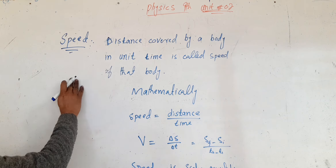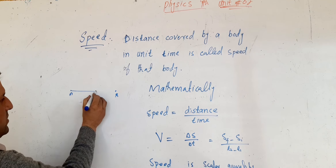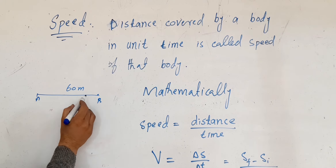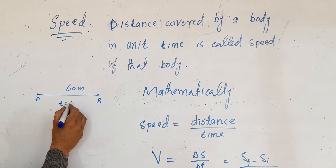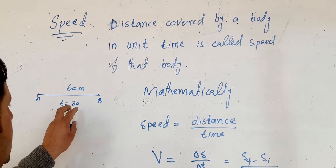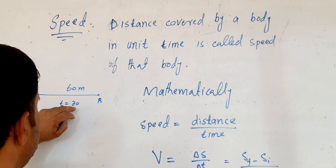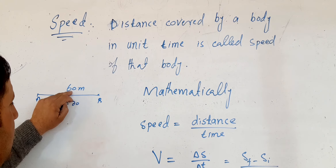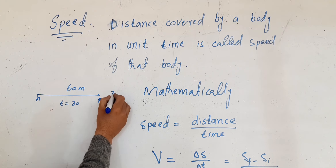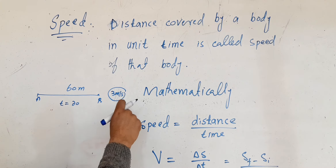For example, if you have point A and point B, and the distance is 60 meters, and it takes 20 seconds to cover that distance, then the speed is 60 meters divided by 20 seconds, which equals 3 meters per second. This is the distance covered by the body per unit time.